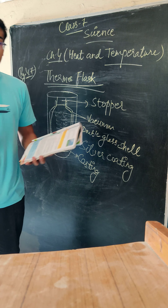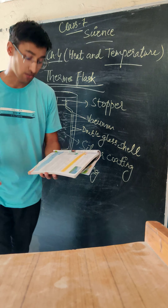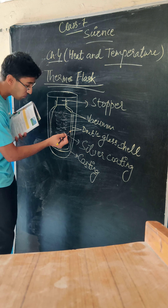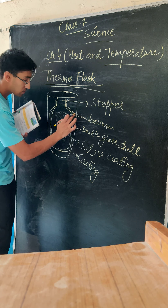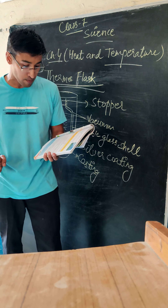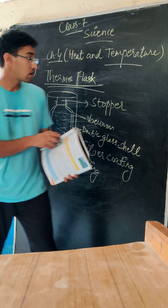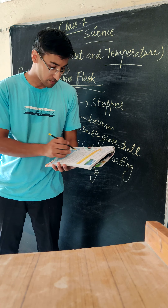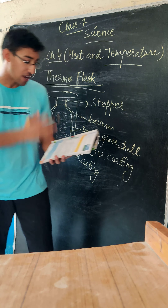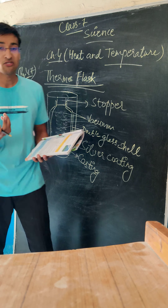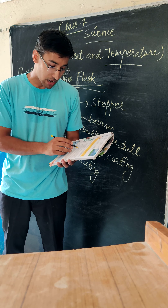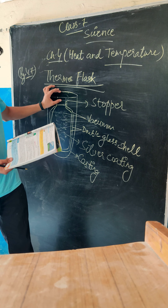It is a double-walled glass vessel — there are two glass walls. It has a silver inner surface. The gap between the two walls encloses a vacuum. It is completely sealed at the top. The flask is placed on the support of a cork, caught in a metal case.